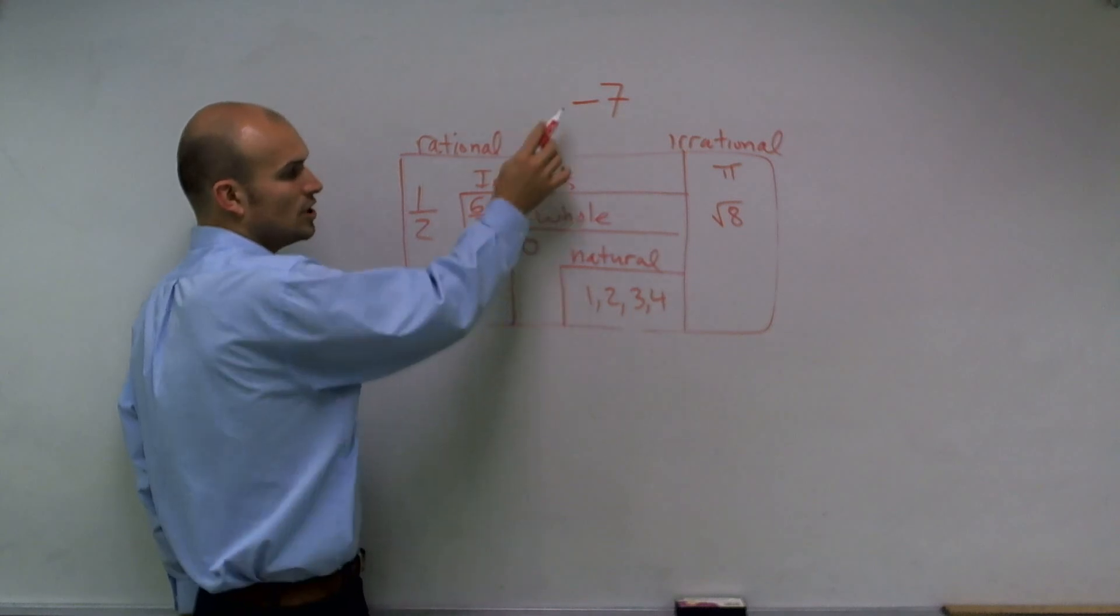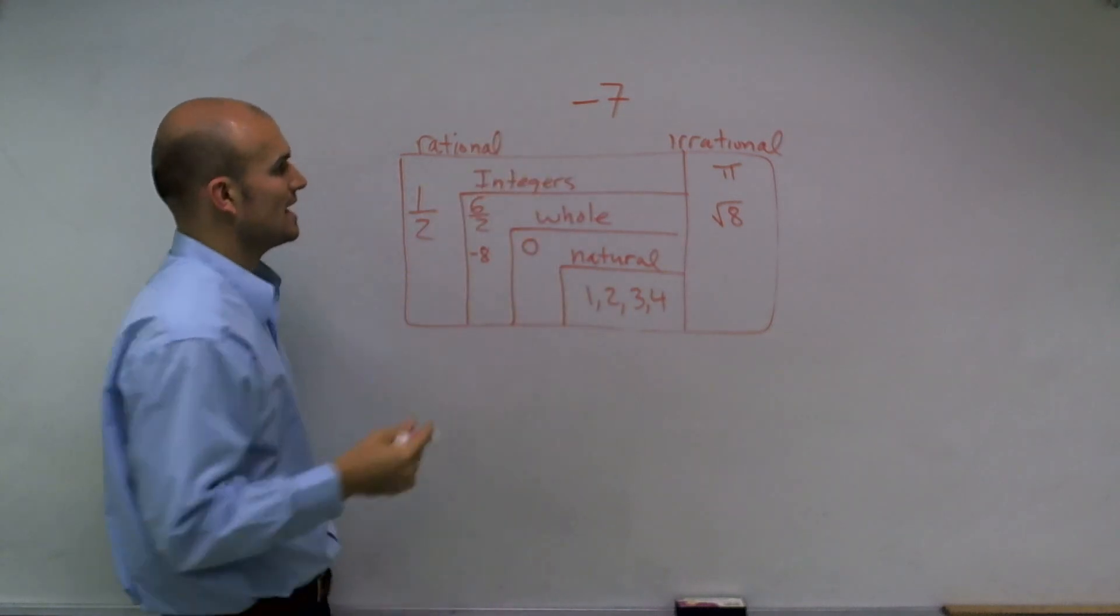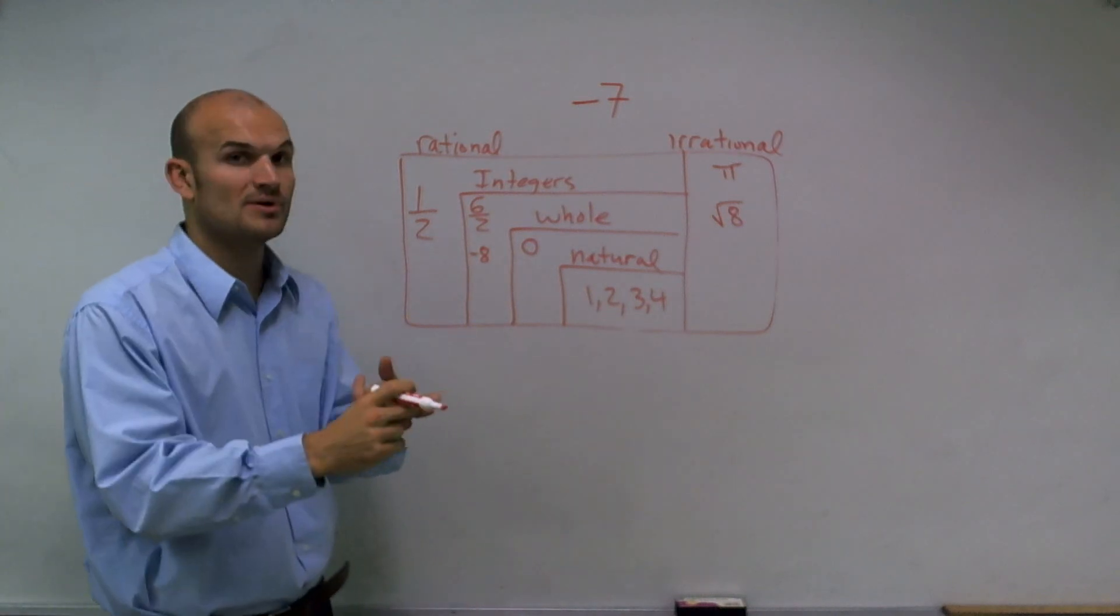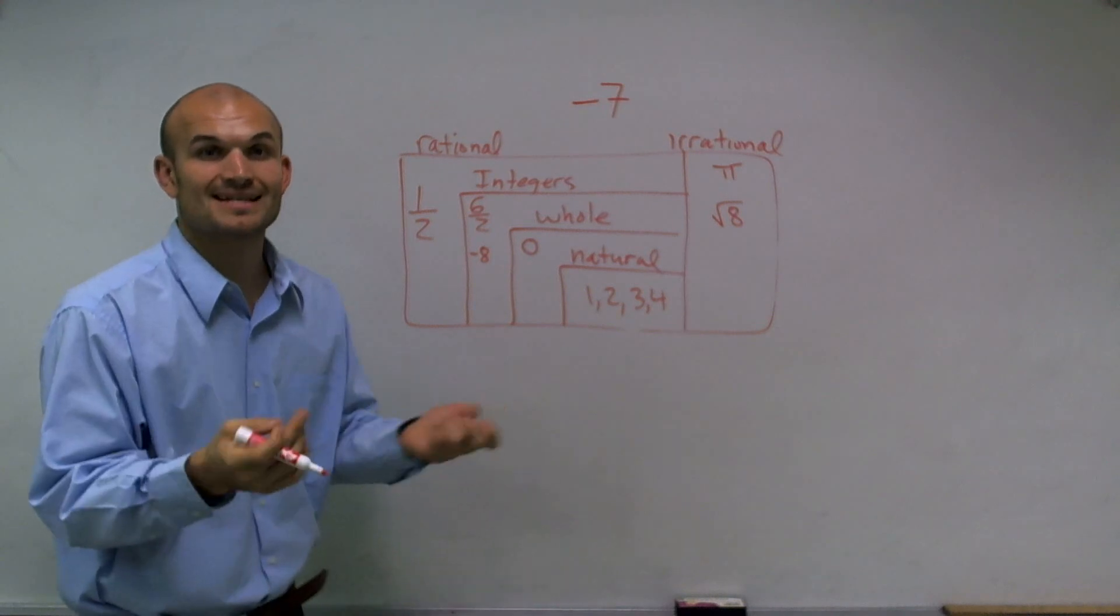All whole numbers, no whole numbers are negative, nor are the natural numbers negative. So therefore, negative 7 is only going to be contained in the set of real numbers, rational numbers, and integers. And that's it.